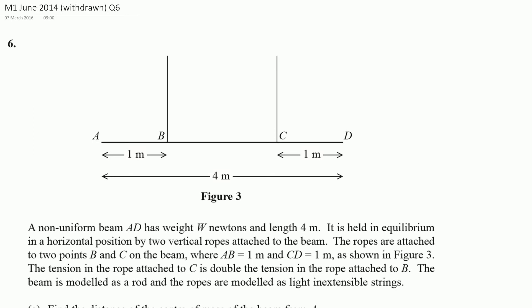Question 6 here, we're moving on to talk about moments, and we have a non-uniform beam, meaning that its mass is not acting in the center. Weight W has a length of 4m, it's held in equilibrium, ropes attached at B and C, and we're given some lengths.